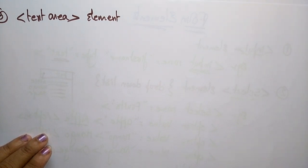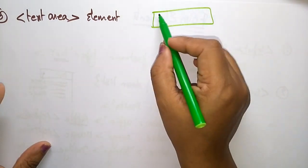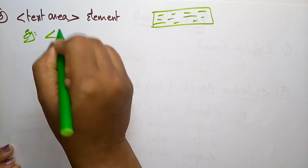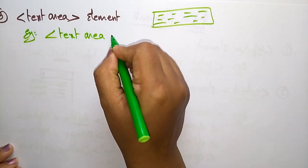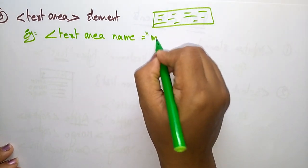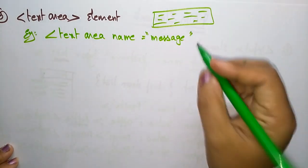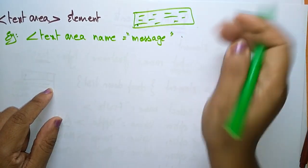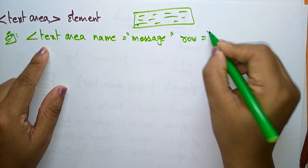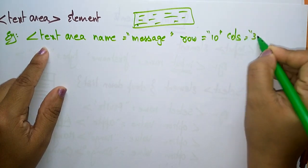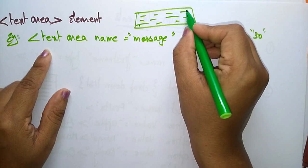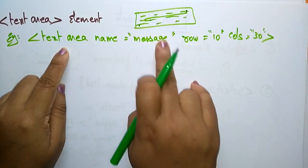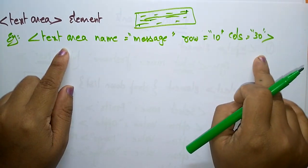The textarea is also a form element that defines a multiple-line input field. You can enter multiple lines — for example, for an address. In the example, textarea with name equal to 'message', rows equal to 10, and columns equal to 30. Up to 30 columns you can enter text, after which it skips to the next row, up to 10 rows total.